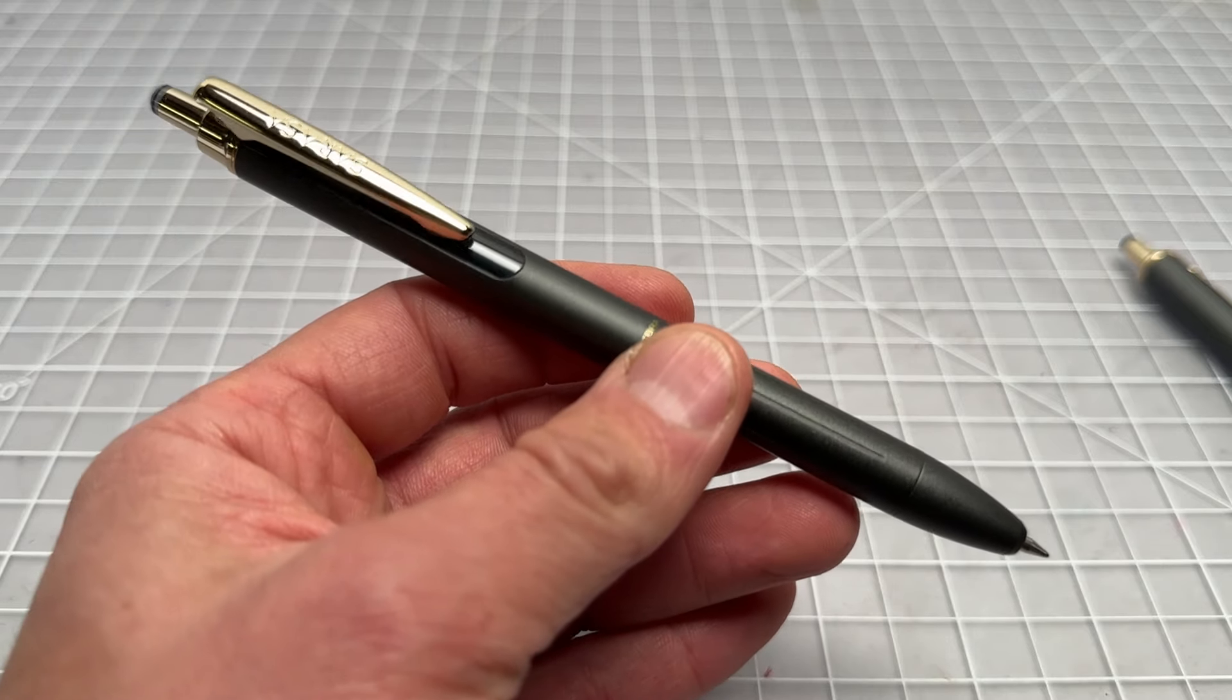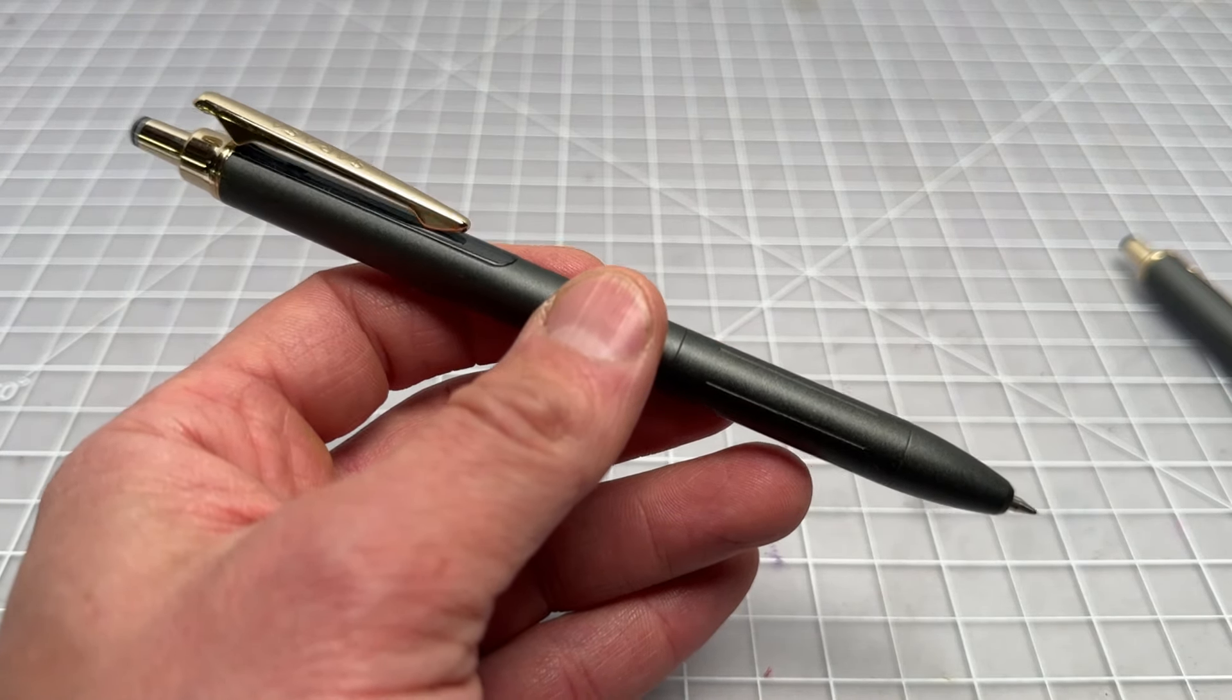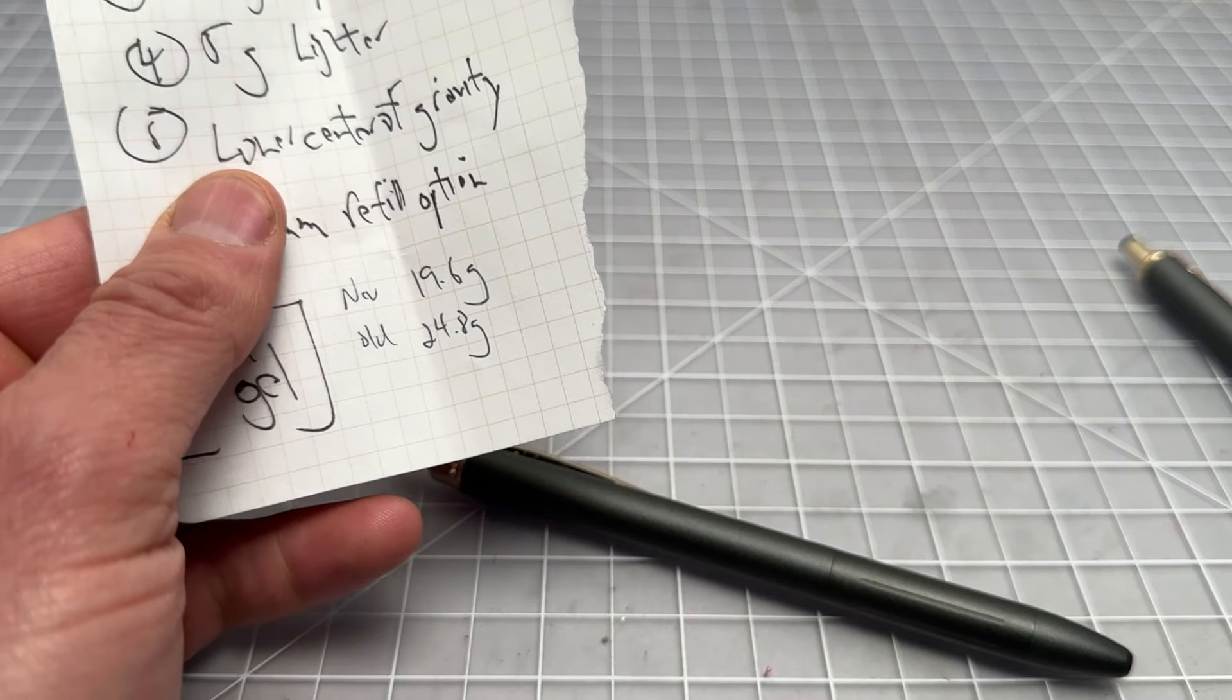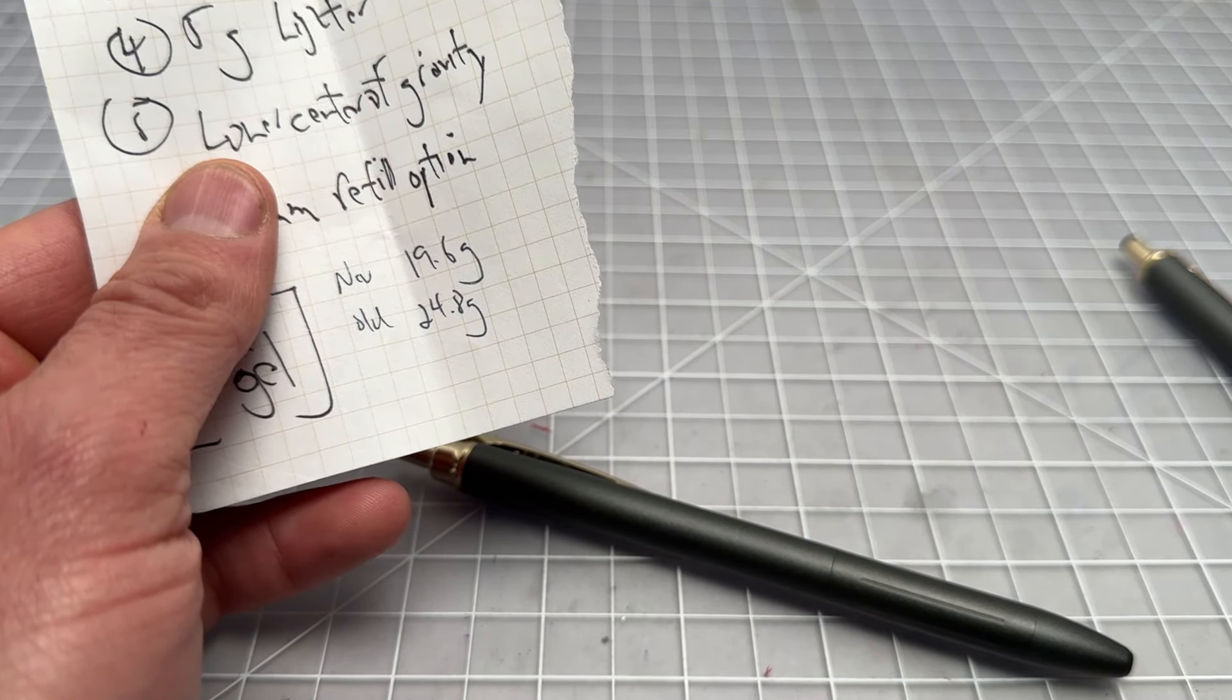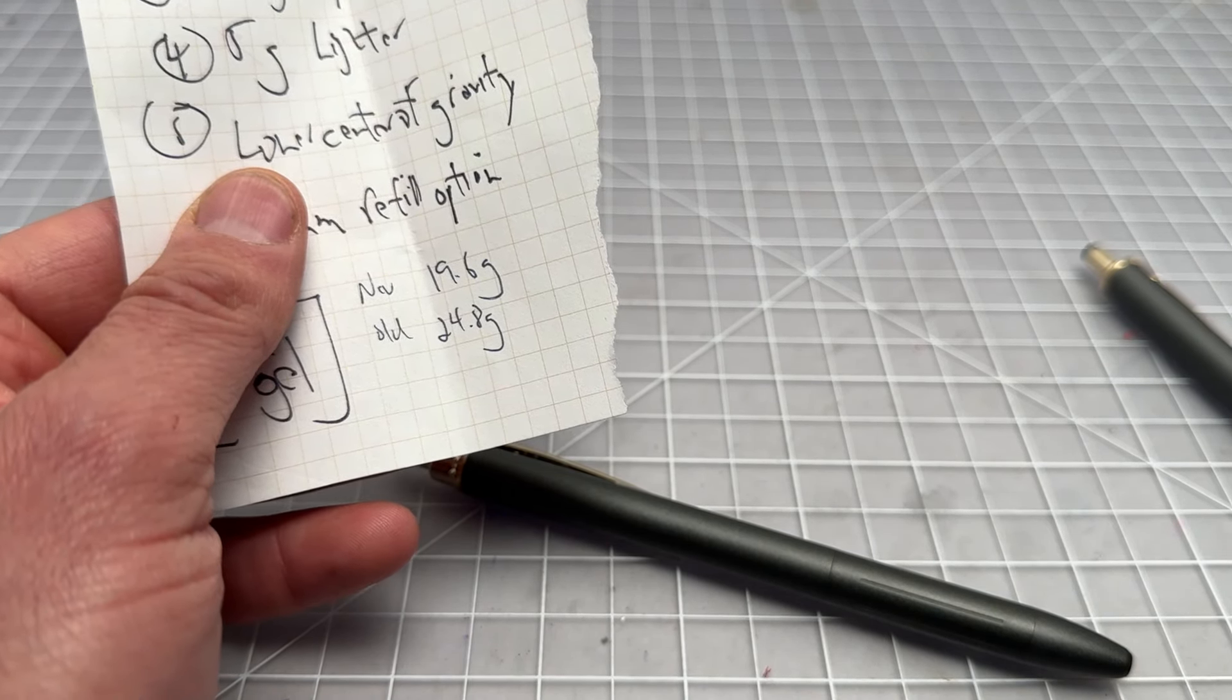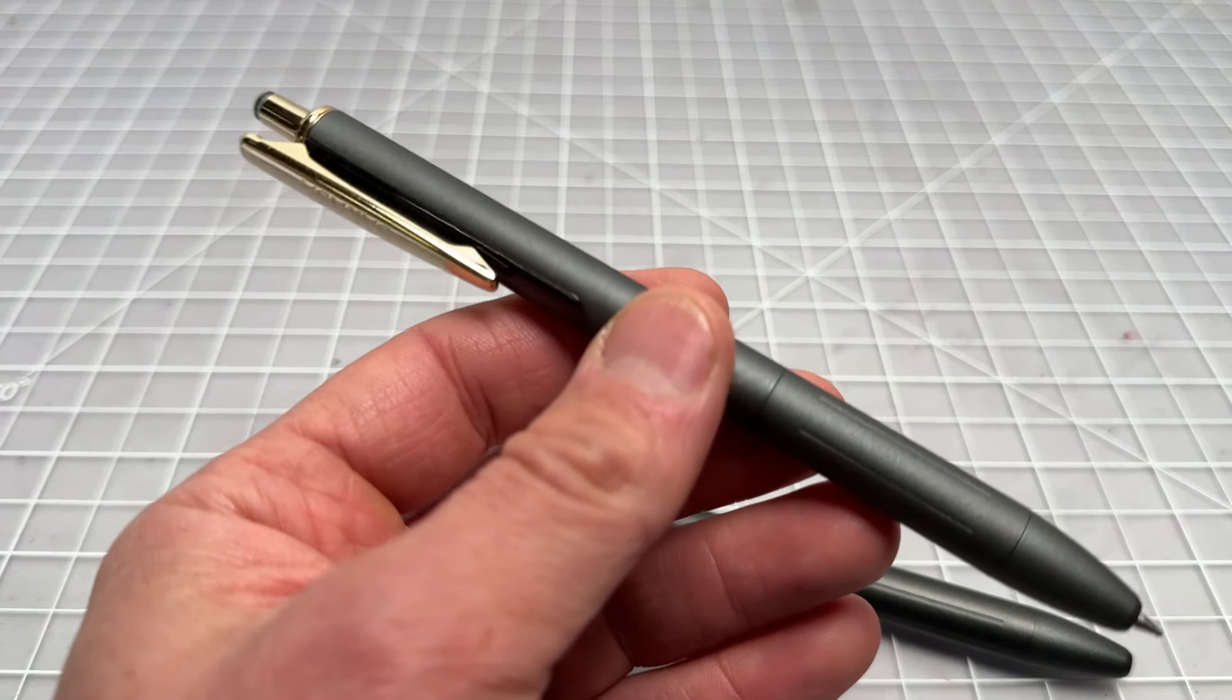Next, the Sarasa Grand Vintage Renewal is 5 grams lighter than the previous model. I measured them on a scale to confirm. The new one, the Sarasa Grand Vintage Renewal is at 19.6 grams. The old version, the standard Sarasa Grand was at 24.8 grams so definitely about a 5 gram difference there.